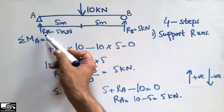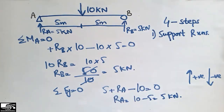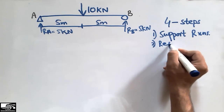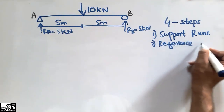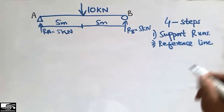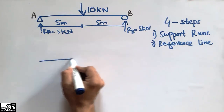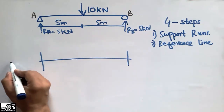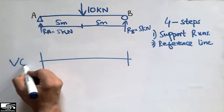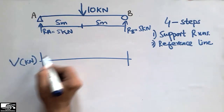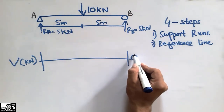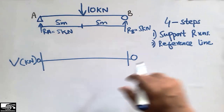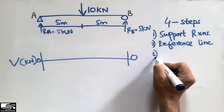The second step is to draw the reference line. What we do is draw the reference line for the shear force diagram. The two reference lines are for shear force in the unit of kilonewton, because the load is in kilonewton, and the reference line is represented by zero.